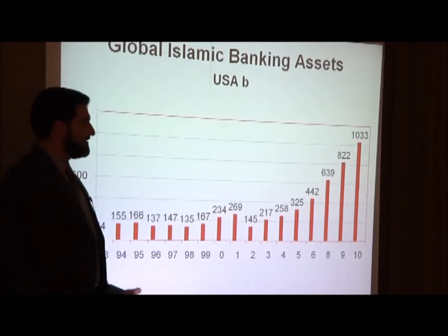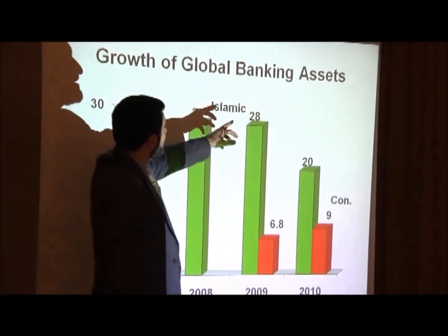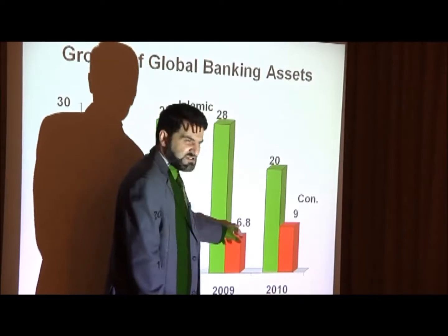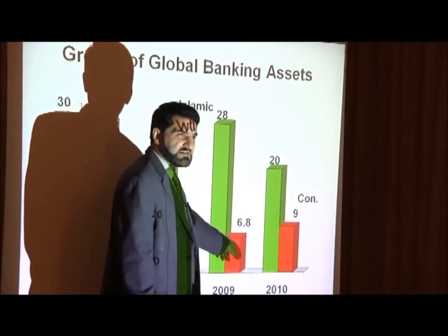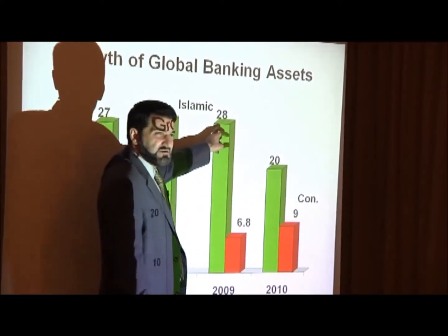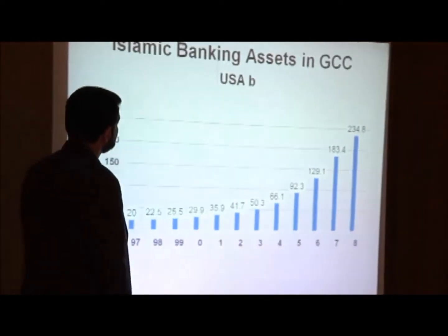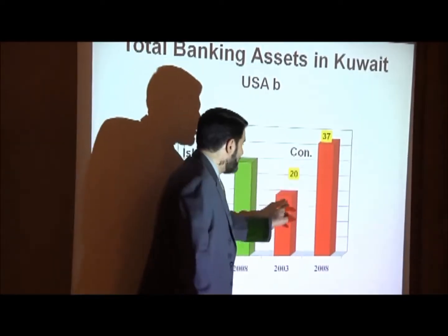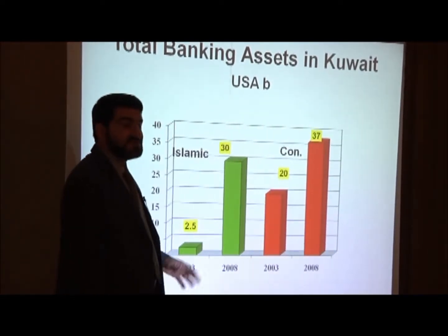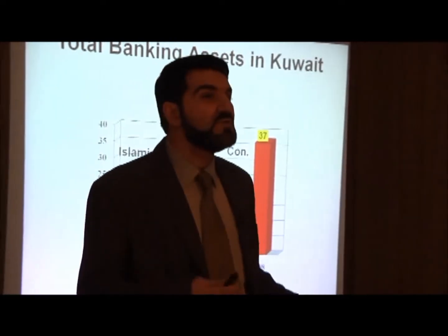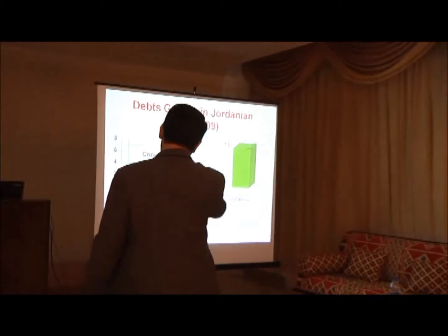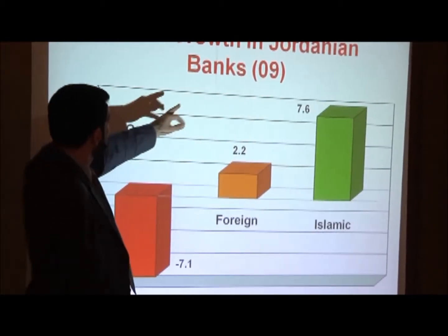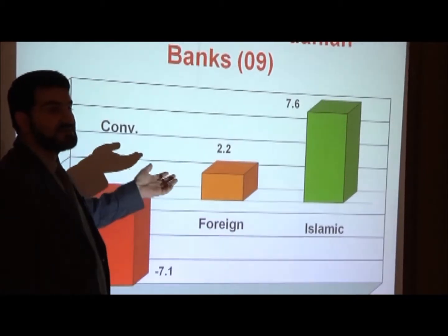In GCC countries the growth is still huge. In Kuwait alone, look at the growth — this is what attracts economists and bankers. For example in Jordan in the same year, look at the growth of Islamic versus non-Islamic versus foreign banks. This is one reason why intelligence agencies every single year come to Kuwait to examine the House of Zakat — they want to understand the huge income and outcome and where it comes from.